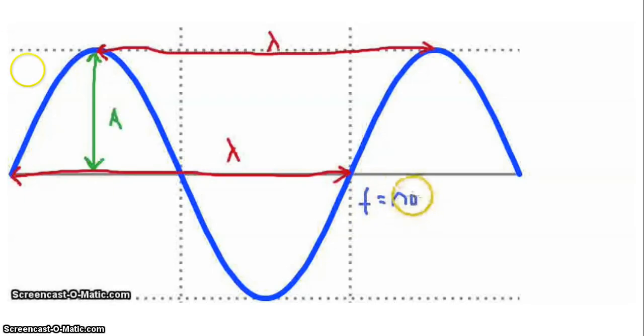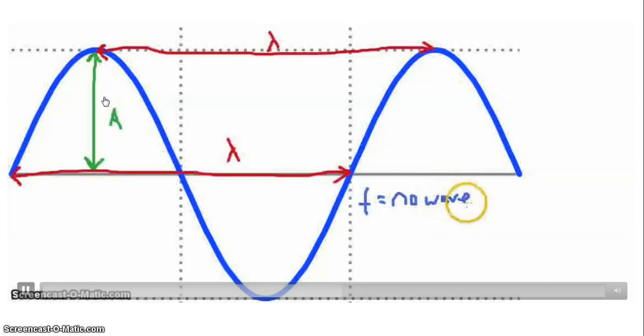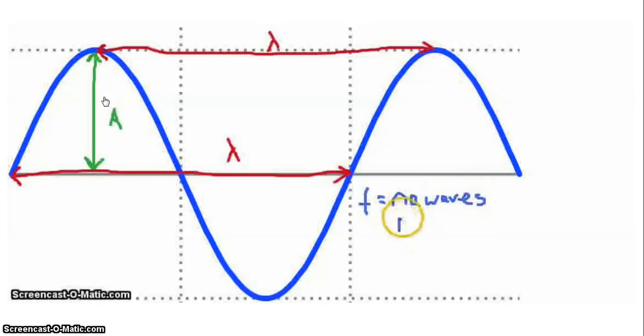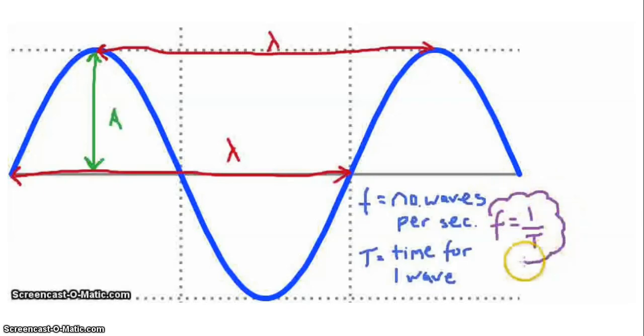The number of full waves you get going past a particular point per second is the frequency and the time it takes for one full oscillation or one full wave to occur is called the period. If we know that the frequency is the number of waves per second and the period which we represent with a capital T is the time for one complete cycle or one full wave, then we can link those two values together using the formula that frequency is equal to one over the period T of your wave. So the number of waves you get passing a point per second is one divided by the time it takes for a full wave to occur.